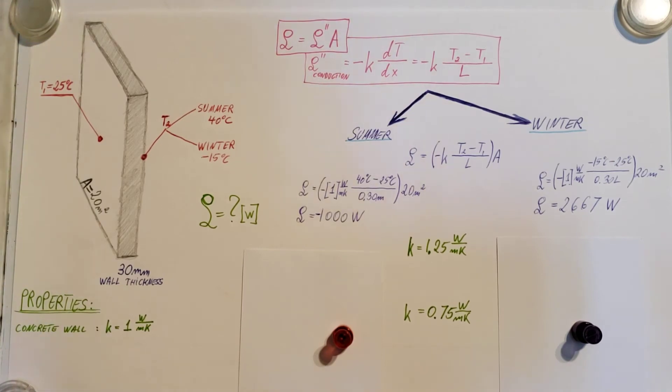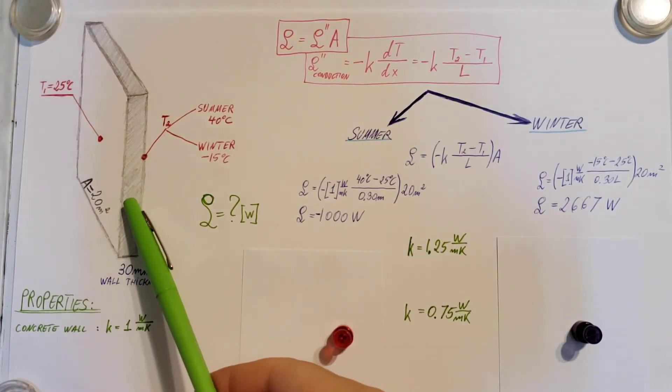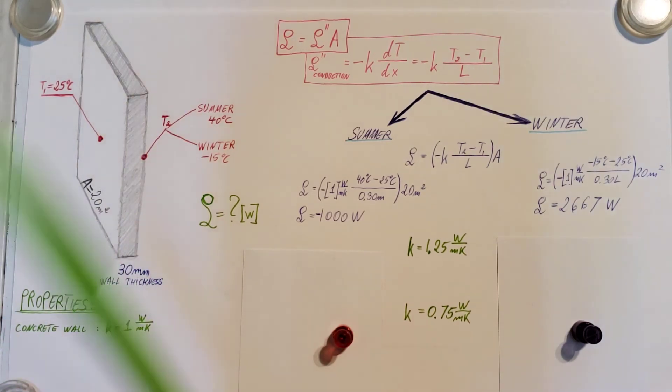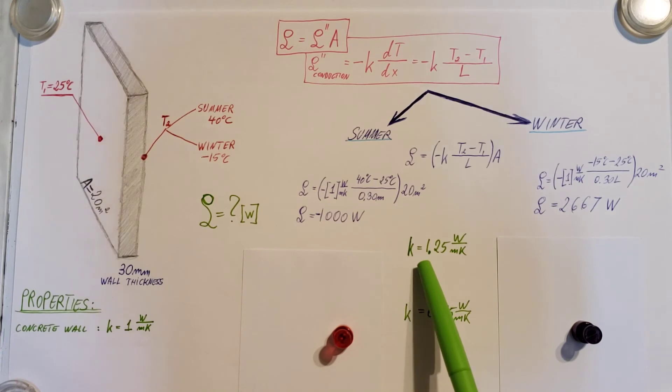Now, the problem also asks us to play around a bit and see what kind of values would we get for these heat losses if we would use a different material here. Like they said, this is concrete. So if we would use wood, if we would use metal, every single material has a different property. So we would have Ks of different values. So let's see if we had a material that had a K of 1.25 instead of 1 or 0.75. Let's see what happens.